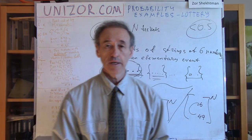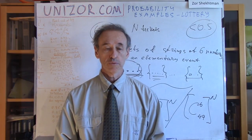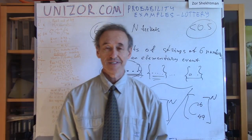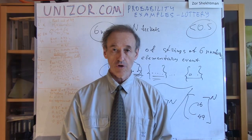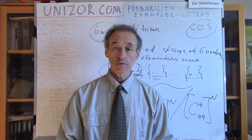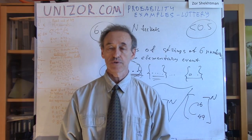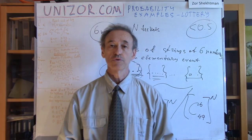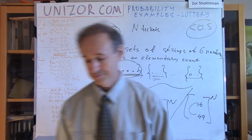That's basically it — that's the end of the lottery games. I hope you are all winners, and I'm sure you actually are if you understand what all these problems are about. I suggest you read the notes for this lecture again and try to recreate the solution. It's written in relative detail in the notes, so you're welcome to go to unizor.com and review this lecture again. Thank you very much, and good luck.